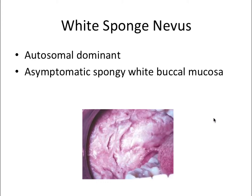First we have white sponge nevus, which is an autosomal dominant condition. It's an asymptomatic, spongy white buccal mucosa lesion. The key thing to know is that it cannot be wiped off with gauze, in contrast to pseudomembranous candidiasis, which you could wipe off with gauze.